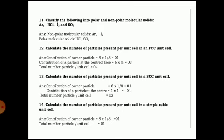Calculate the number of particles per unit cell in a BCC unit cell. Contribution of corner particles: 8 × (1/8) = 1. Contribution of the body-center particle: 1 × 1 = 1. Total = 2 particles per unit cell. For simple cubic: contribution of corner particles: 8 × (1/8) = 1. Total number of particles per unit cell = 1.